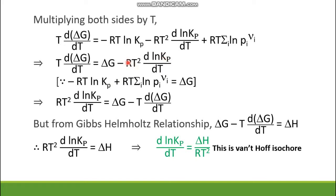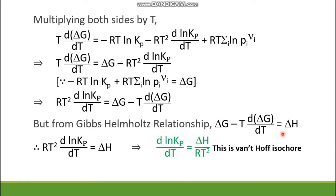Rearranging, taking terms across sides, the equation becomes: RT² d ln Kp/dT = ΔG - T·d/dT(ΔG). From the Gibbs-Helmholtz relationship, we know that ΔG - T·d/dT(ΔG) = ΔH. So putting ΔH in place of ΔG - T·d/dT(ΔG), we get RT² d ln Kp/dT = ΔH. Rearranging, we get d/dT of ln Kp = ΔH / RT². This green-colored equation is known as the Van't Hoff isochore.